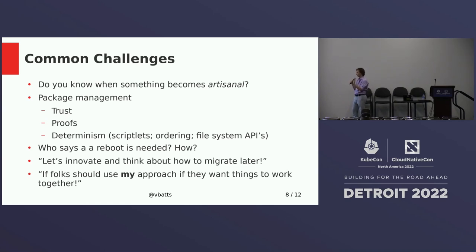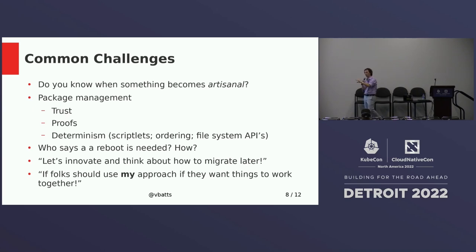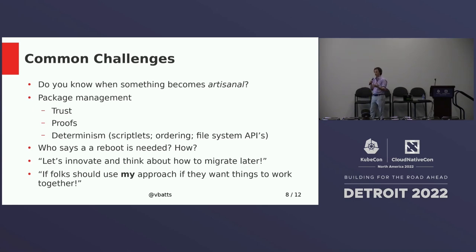Being able to push out some kind of immutable blob and roll it out is great. But even with that, the reason so many people use scriptlets is because there are filesystem APIs. How do you add a user to the filesystem? You can't just drop something into a users.d - there are lots of these systems where you have to go edit a file somewhere, twiddle a file somewhere. That is the API of interacting with a Linux.